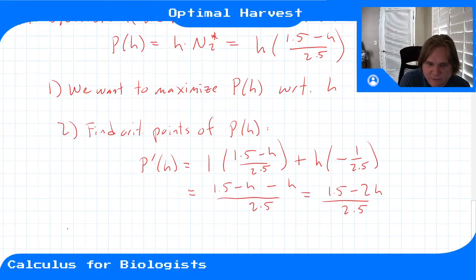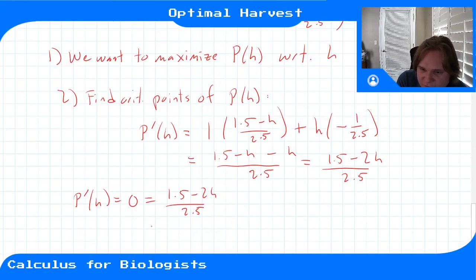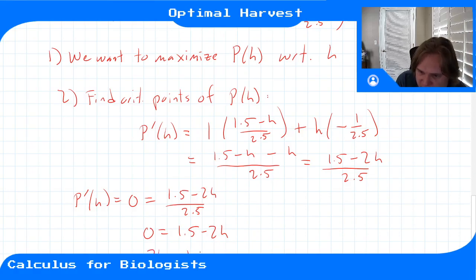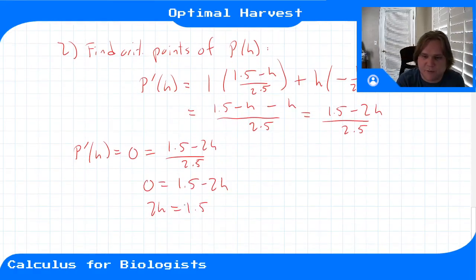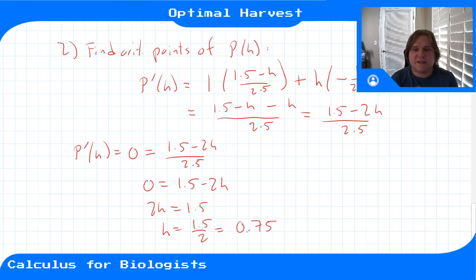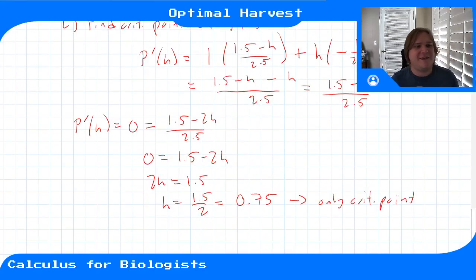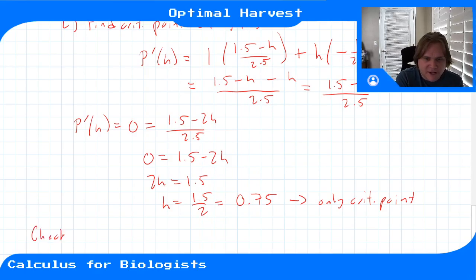Setting p'(h) = 0: 0 = (1.5 − 2h) / 2.5. Multiplying through by 2.5: 0 = 1.5 − 2h, so 2h = 1.5, giving h = 1.5/2 = 0.75. This is the only critical point of our function, so it's a good candidate for the maximum harvest rate.